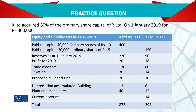Current account का मतलब है कि company आपस में लेन-देन करती है तो अपना एक current account खोल लेती है — यह bank account नहीं है। यह holding यानी X और subsidiary Y के बीच का current account है। अगर यहां current account है तो दूसरी side पर भी current account आएगा। यहां एक problem है: उधर 14 है इधर 19 — यह cancel नहीं हो सकता unless आप इसको adjust करें।